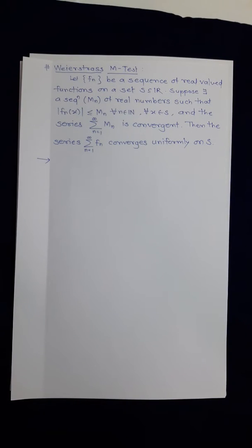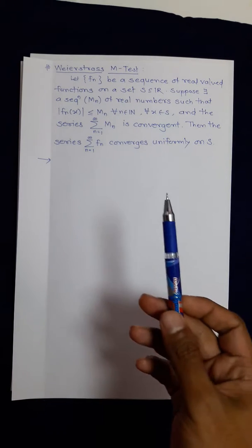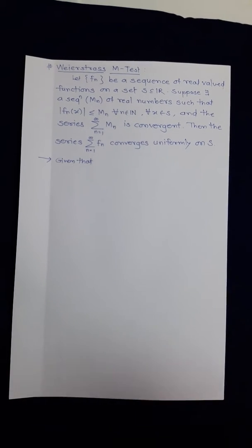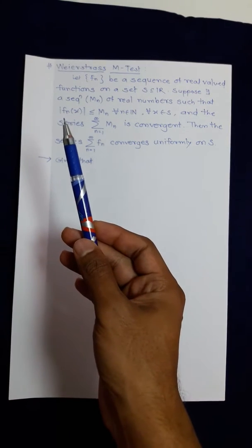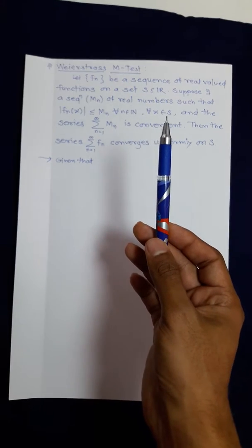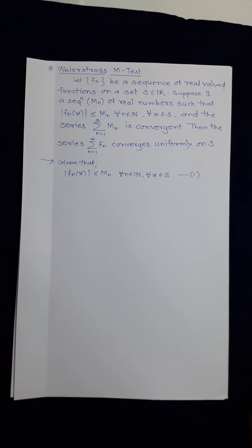Let us discuss the very important theorem of series of functions — the Weierstrass M-test. We have to prove that summation f_n converges uniformly. The first important given condition is: mod f_n(x) is less than or equal to M_n, for all n belonging to the set of natural numbers and for all x belonging to S. We will call this equation number one.